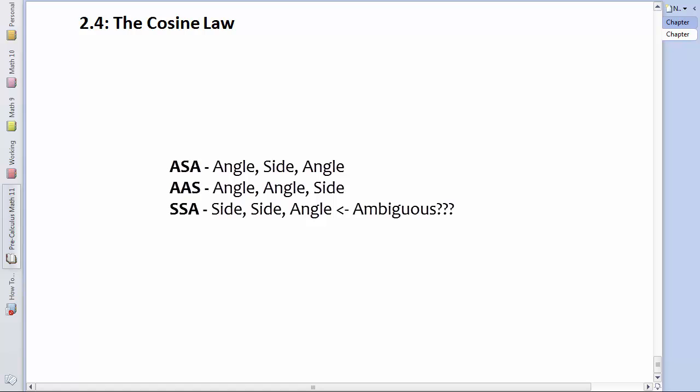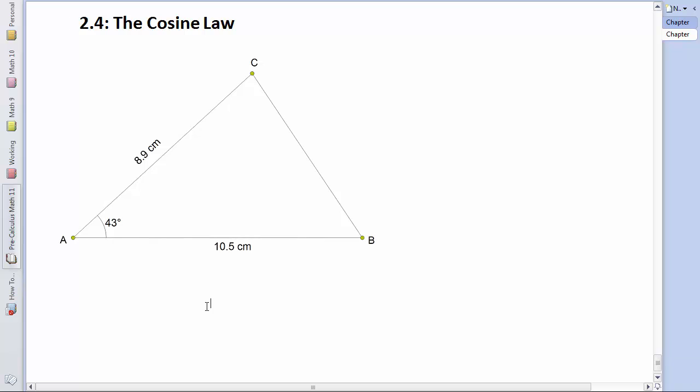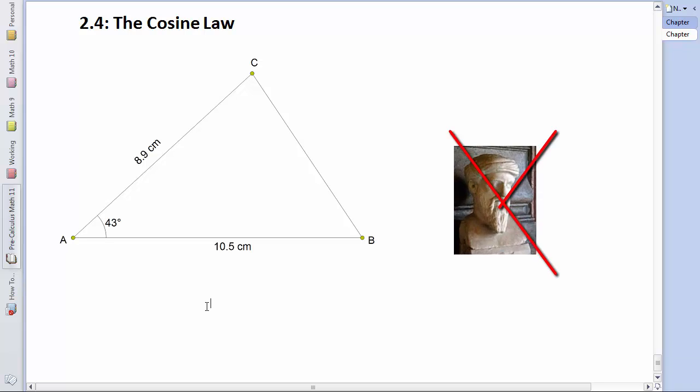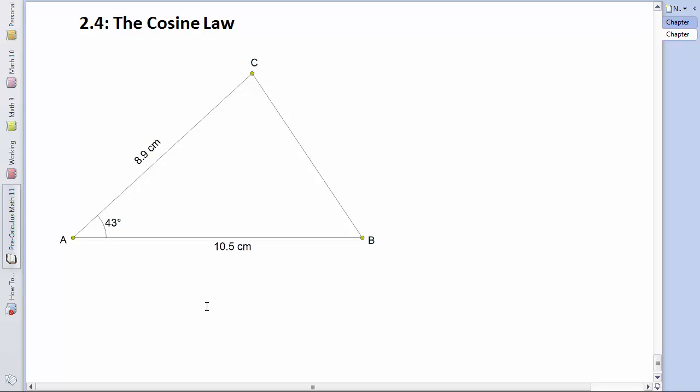But what if we are given two sides and the angle in between? For instance, find the length of side A in this diagram. Well, we can't use the sine law because we don't have an opposite side and angle pairing. And we can't use Pythagoras or any of our basic trigonometry because this isn't a right triangle. So we need to go back to the drawing board and see if we can derive a formula to help us solve for A, but only in terms of the given information, side C, side B, and angle A itself.